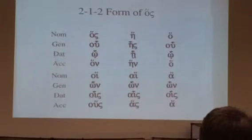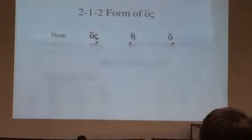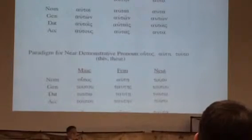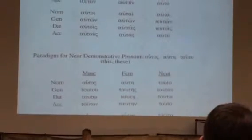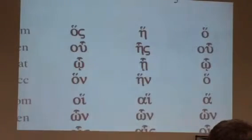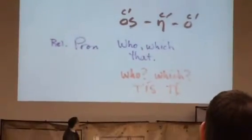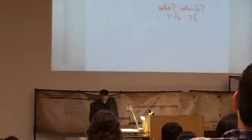Those are the two forms you need to be able to tell apart. On CAMS, I've put up a pronoun comparison sheet. You'll want to get this and keep it nearby. It puts autos and outos next to each other so you can see them and learn to recognize the difference. It puts the article and the relative pronoun next to each other so you can compare the two paradigms. That's a helpful thing to keep nearby until you've gotten comfortable working with the difference between the relative pronoun and the article, and between autos and outos.